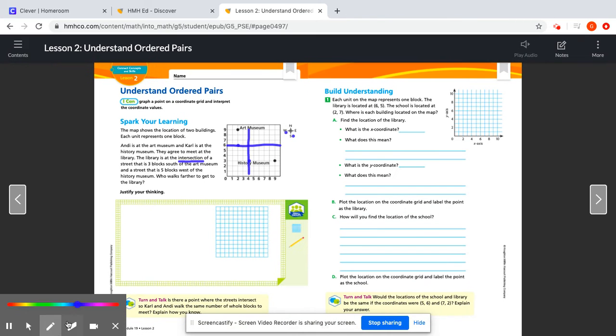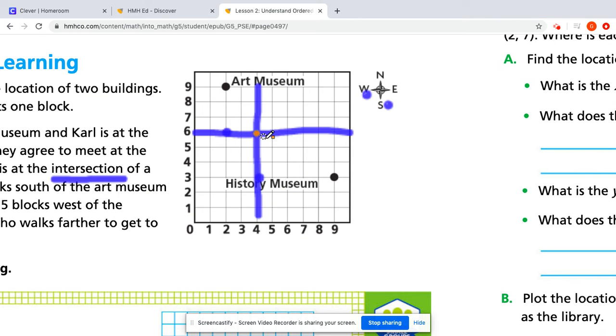So they both meet, let me get another color. They both meet here. So this is where the library is. I'm going to put L there for library, and it's on four, six.